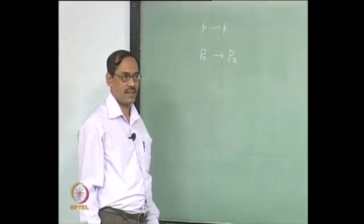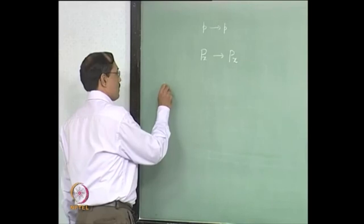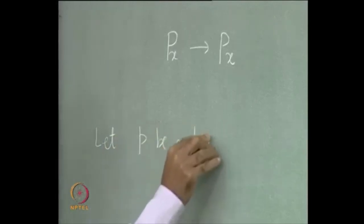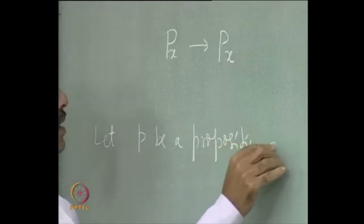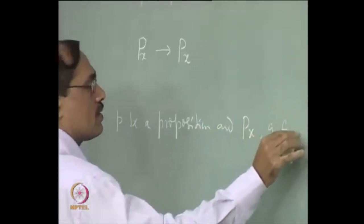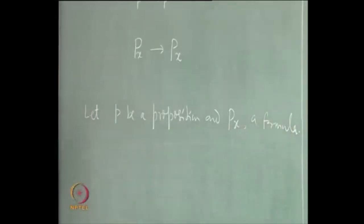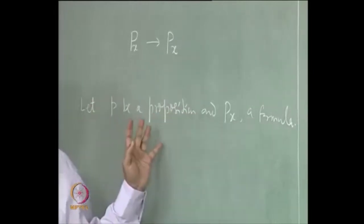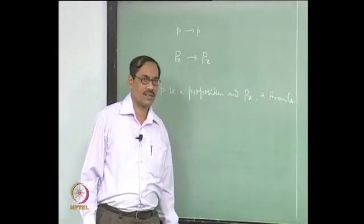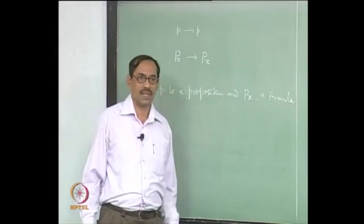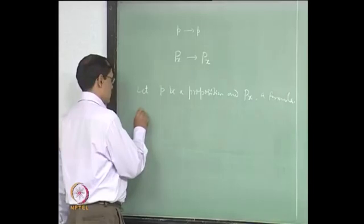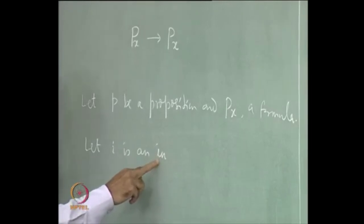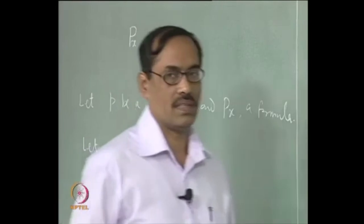That is what we want to preserve first. What we propose is: suppose I have a proposition p and p(x) a formula. In some way, I am identifying this p with p(x). I have a map. In formal way, we can write: for each proposition, the map gives some formula. For small p, I have p(x). Suppose I is a PL interpretation. Let us write PL interpretation instead of just interpretation.